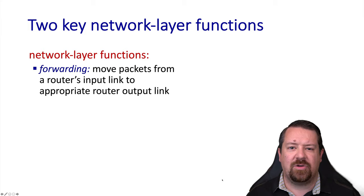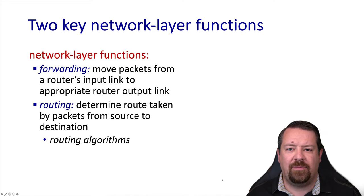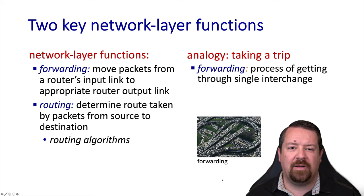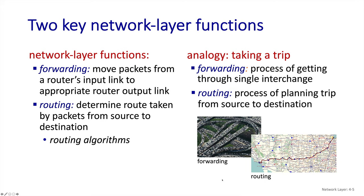The function just mentioned is called forwarding, where an individual datagram arrives at a router's input link and is moved to the correct output link. The routing algorithm, which is what routers are named for, is distinct from this — it determines what path packets should take from their source to their destination, and provides the data needed for the forwarding operation to make the correct decisions. If we look at the traffic flow analogy, forwarding is like navigating a single interchange or intersection, whereas routing is the process of planning an entire trip.